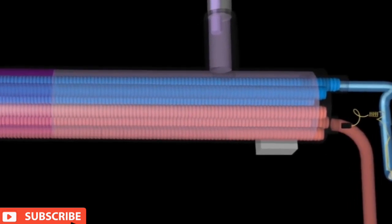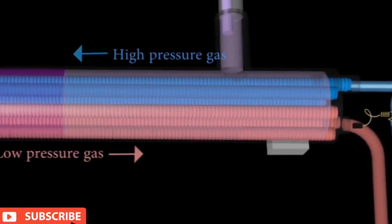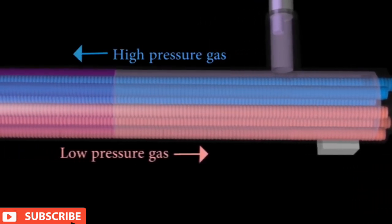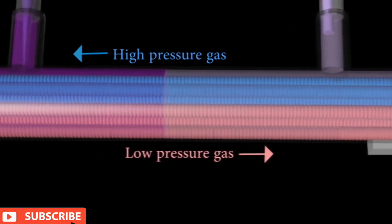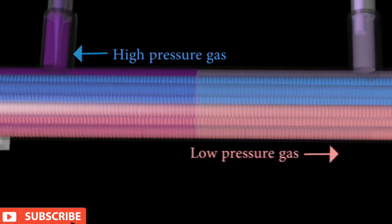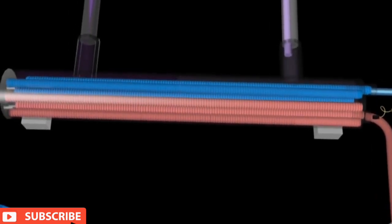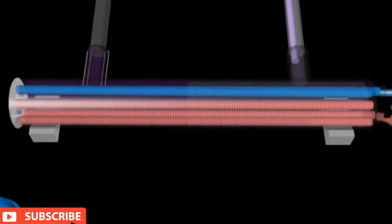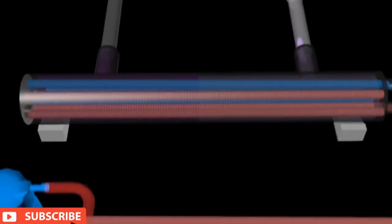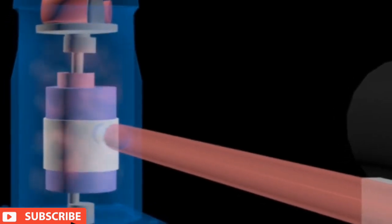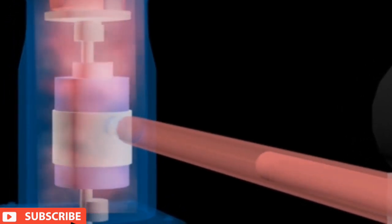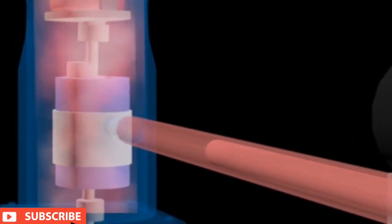The evaporator most commonly used is the shell and tube type, where the refrigerant flows in the tube and water floods the shell. The evaporator is insulated to reduce heat transfer. The refrigerant in low pressure gas then returns to the compressor to continue the next cycle.